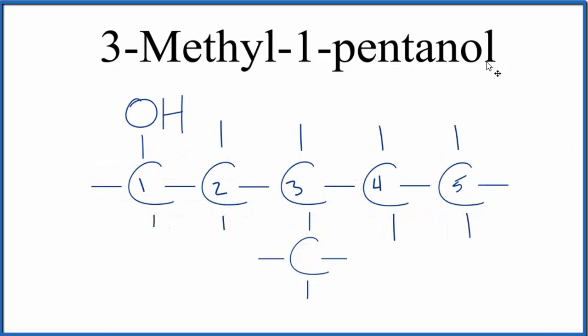So to recap, we knew we had an alcohol because of the OL. So we put our alcohol here on the first carbon. The pent told us we had five carbons, and then we have a methyl group, CH3, on the third carbon.